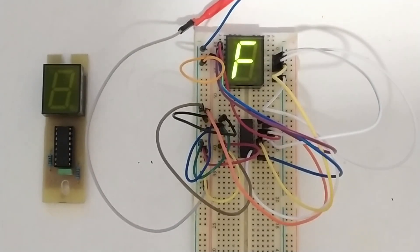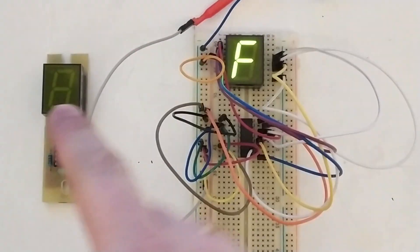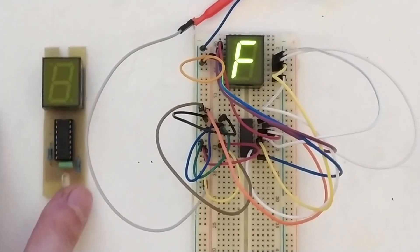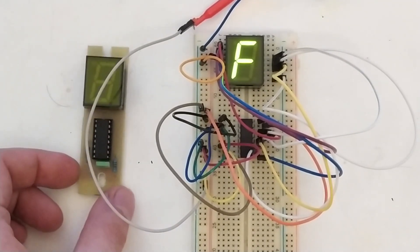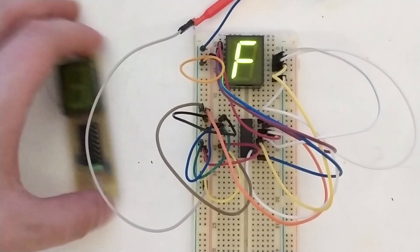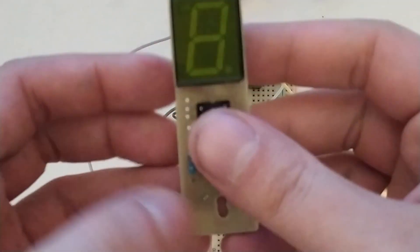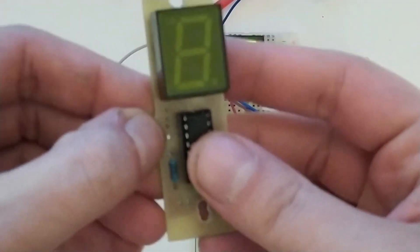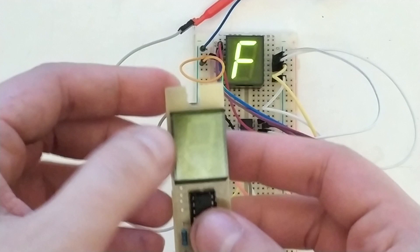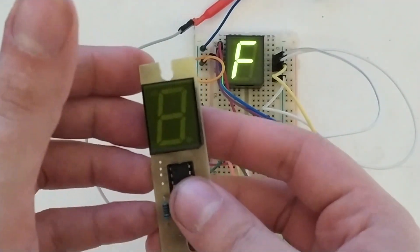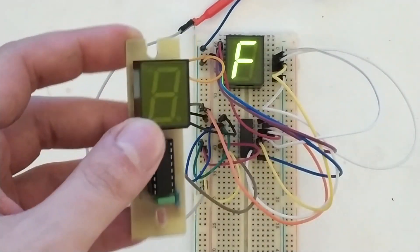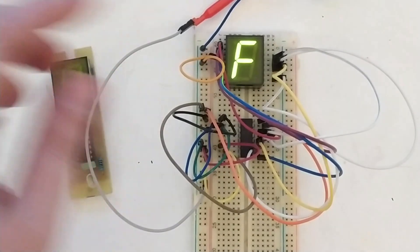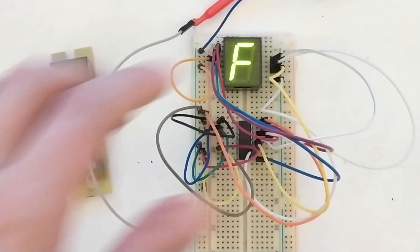Today we're going to talk about these two things here, this and this, and they're both the same. They're both binary to seven-segment hex decoders.